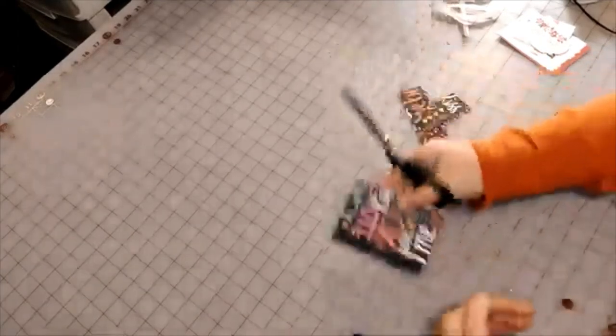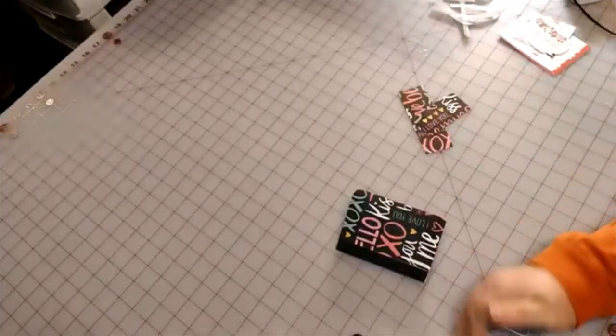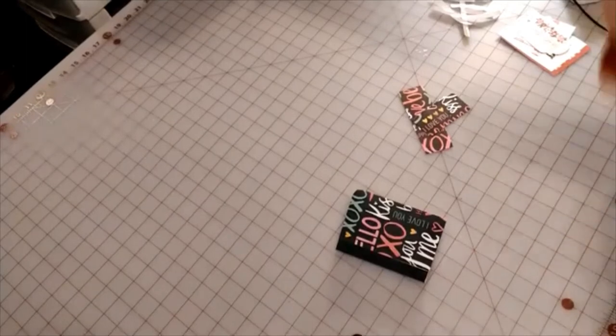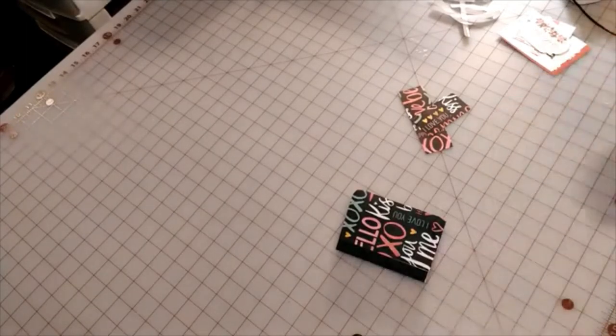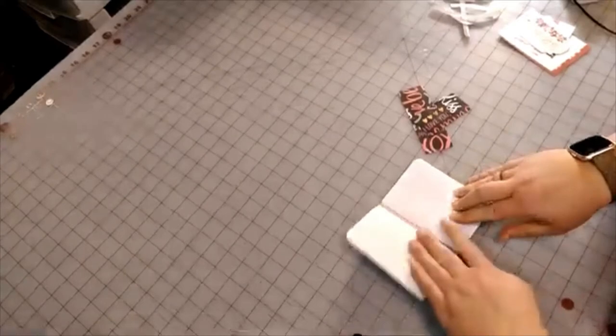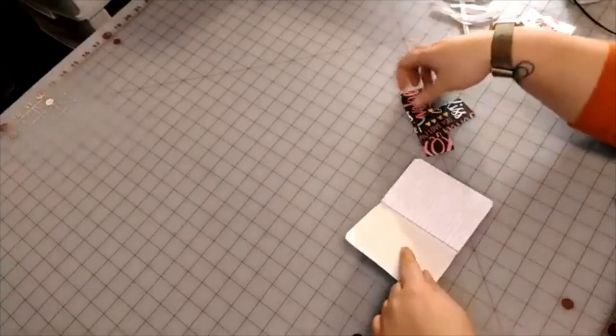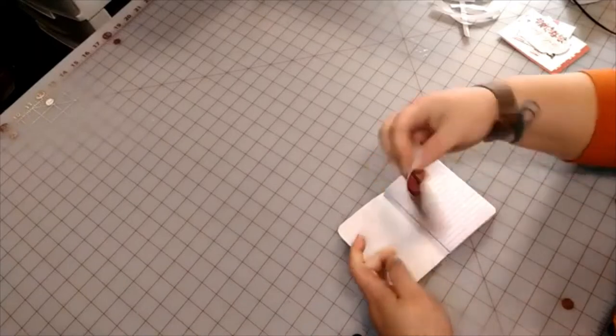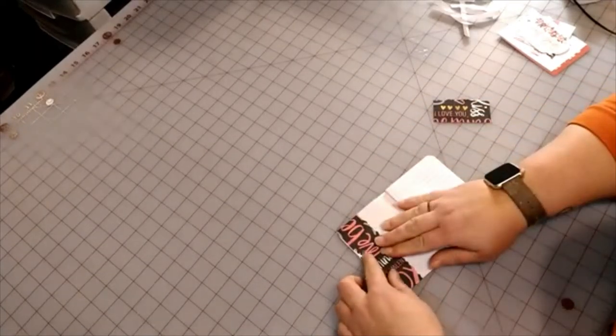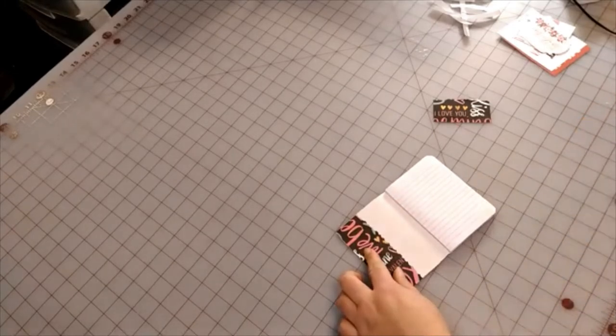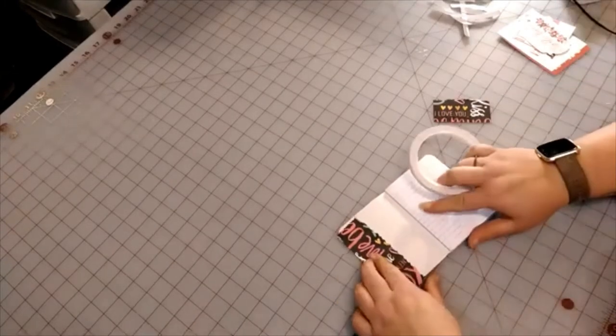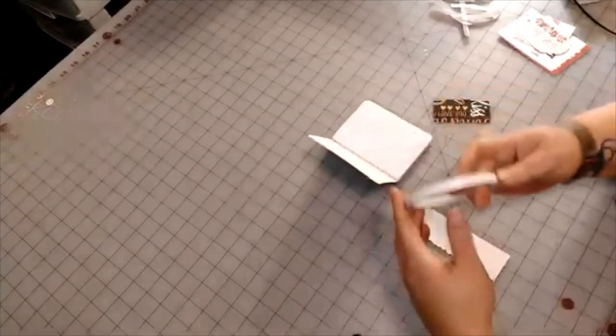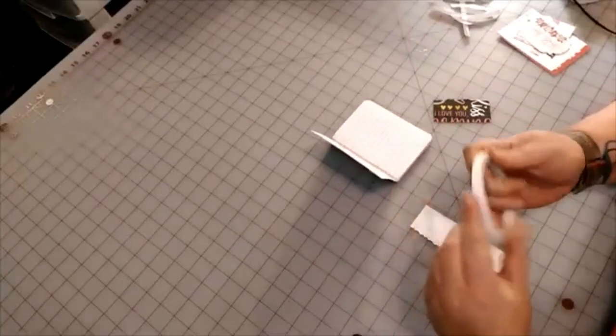Now that you got that done, you're going to open it up and we're going to put the one and three-fourths by four and a half for the side pocket. We're going to put it there, so we are going to put some of this double-sided tape on.